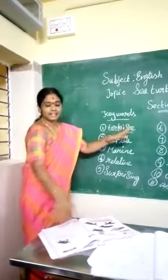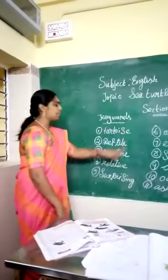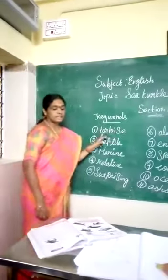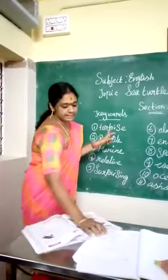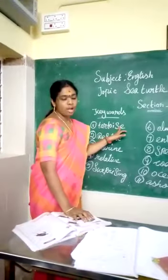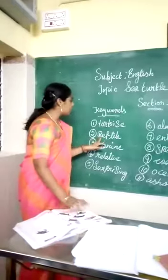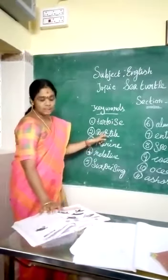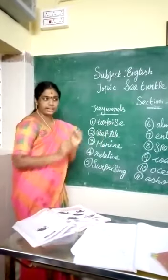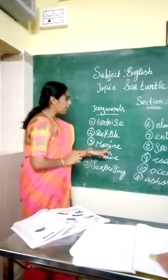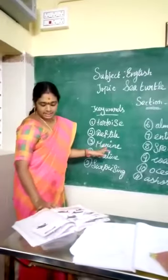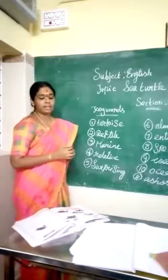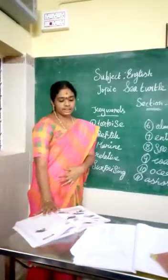Some keywords in this lesson. First: tortoise — turtle. Next: riptide, which means a strong current. Next: marine, which means found in the sea.